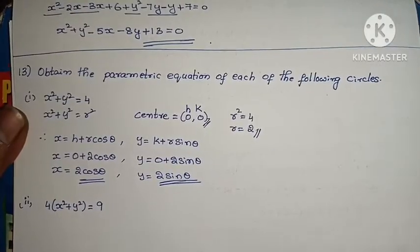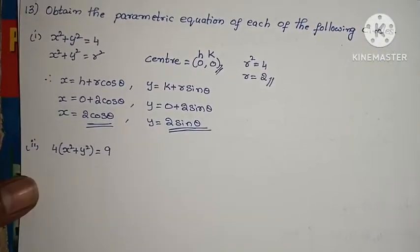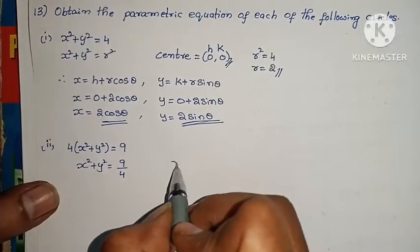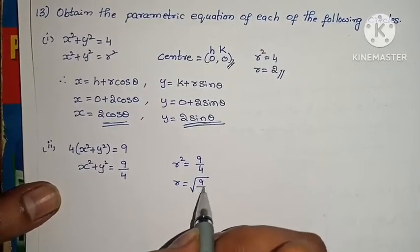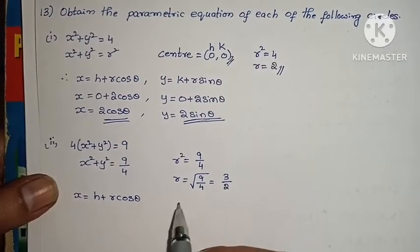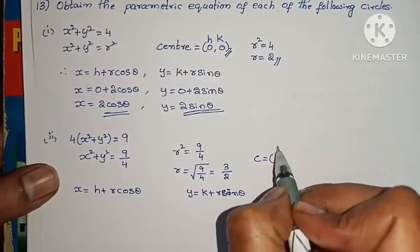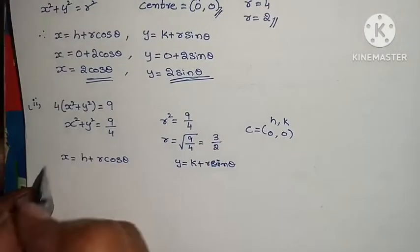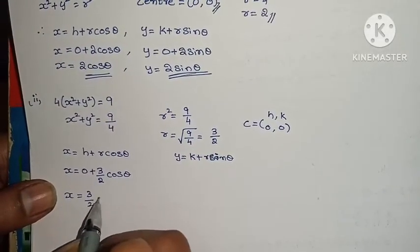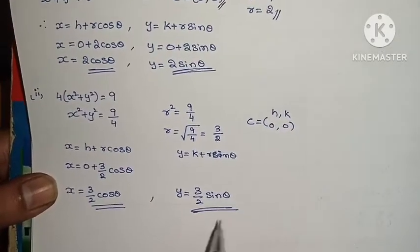For x squared plus y squared equals 9 by 4, center is (0,0). r squared equals 9 by 4, so r equals root of 9 by 4, which equals 3 by 2. Applying the formula: x equals 0 plus (3/2) cos theta, so x equals (3/2) cos theta. Similarly y equals (3/2) sin theta. Problem is complete.